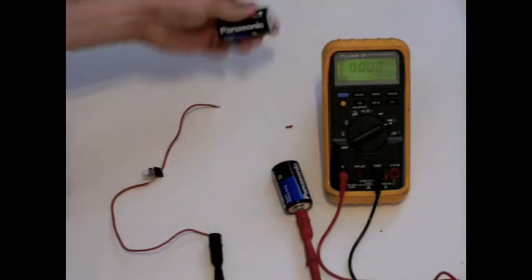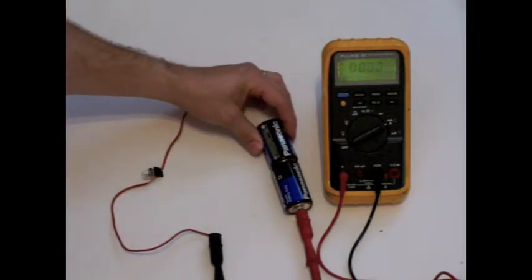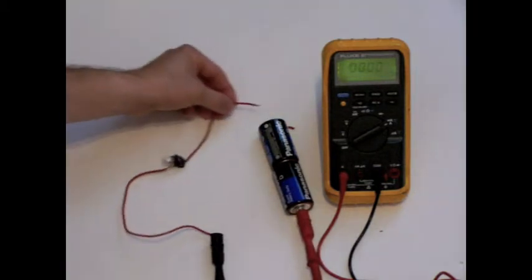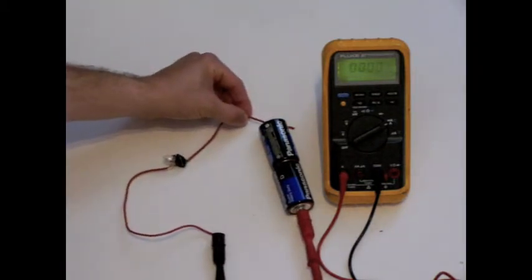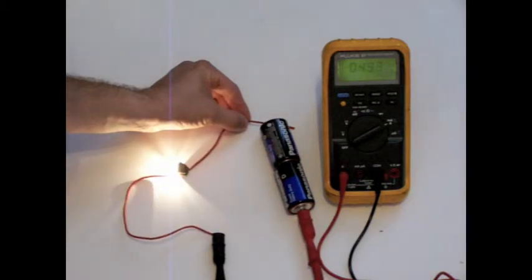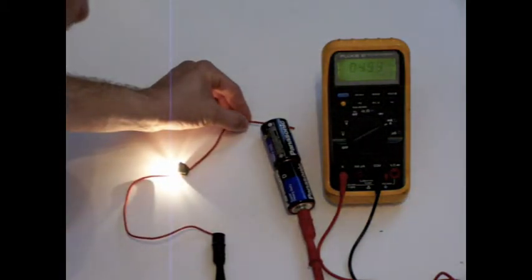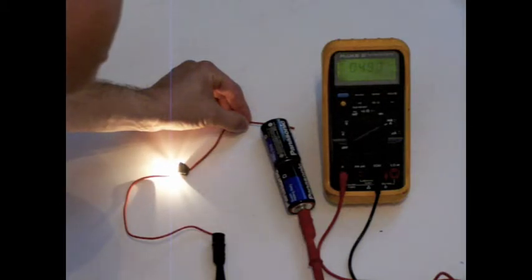If we add a second battery, you'll notice this time the light is much brighter, and the amperage has increased. It's roughly 490, 485 milliamps.